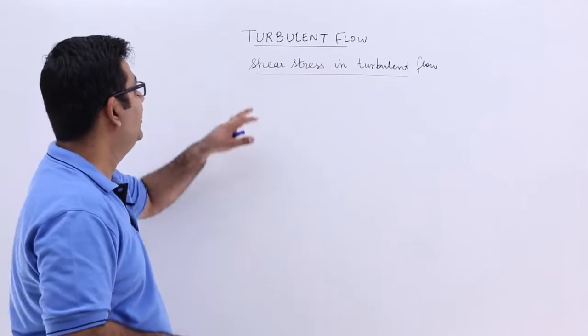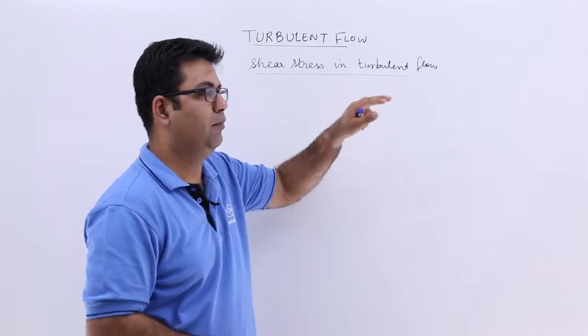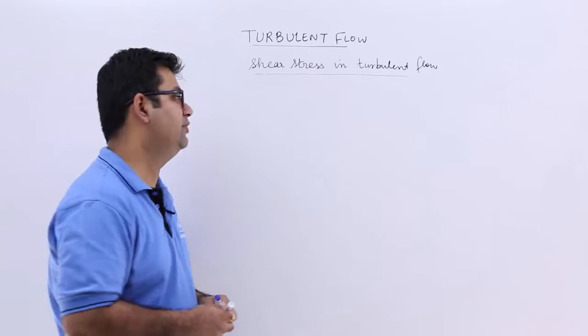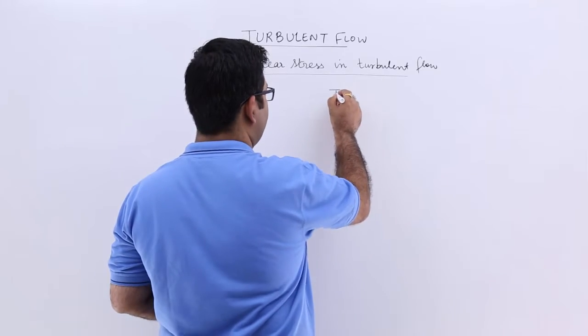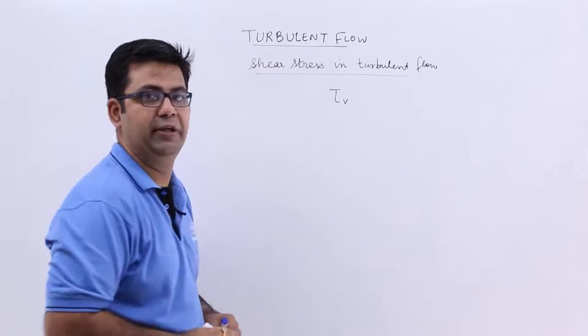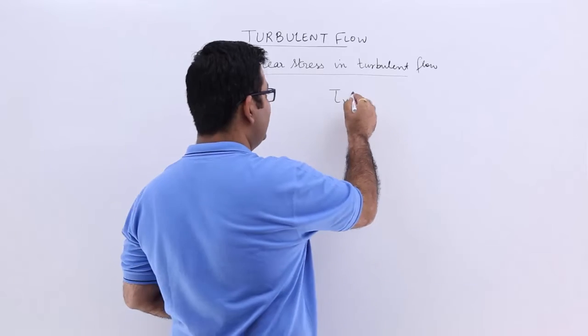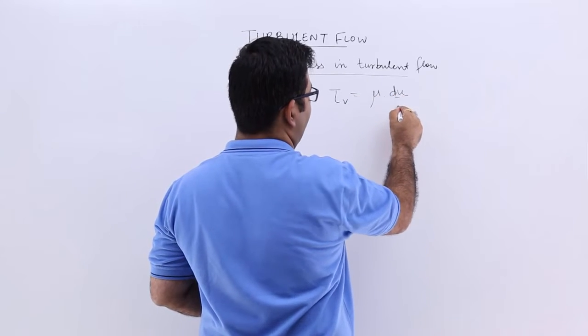Now let's talk about the shear stress in turbulent flow. There are two kinds of shear stresses. The first shear stress is due to viscosity, tau v, and that is mu into du upon dy.